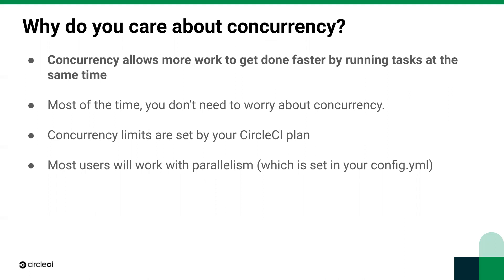The confusion happens usually when users start to work with parallelism. Parallelism can affect your concurrency and sometimes can lead to longer queues for jobs. Let's talk about why that is and how to spot the difference.